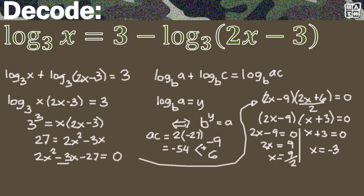But do we accept both values? Please bear in mind that the coefficient inside a logarithm must be positive, because there is no logarithm of a negative number. If we substitute negative 3 into the original equation, both logarithms would be undefined. This means x equals negative 3 is not valid, and we only accept 9 halves as our final answer. You could also verify this by substituting into the equation. We have now decoded the value of x — it's 9 halves for this given logarithmic equation. That's mission accomplished!